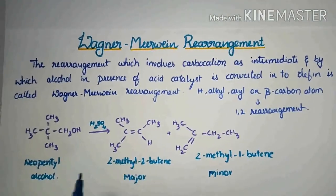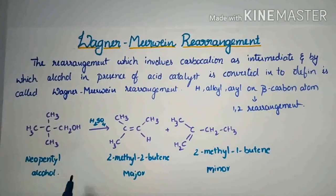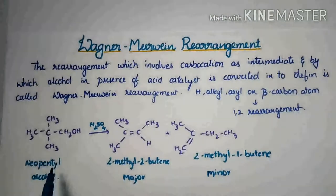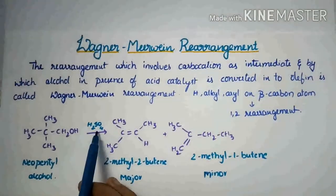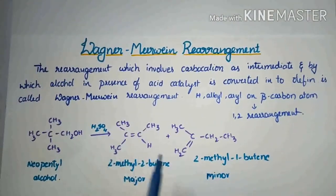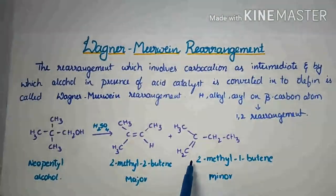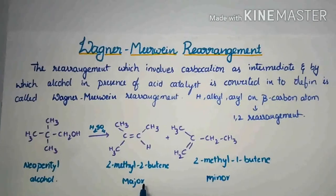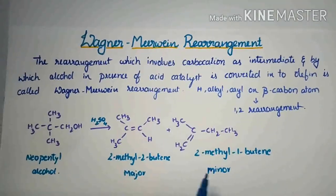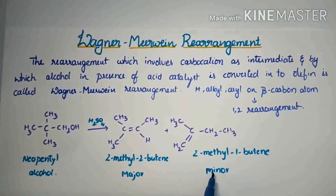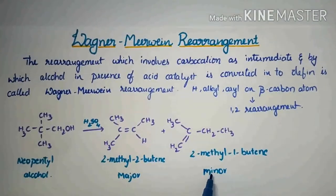Here let us see the overall reaction. It is neopentyl alcohol in the presence of an acid catalyst. It can form a mixture of olefins — one is the major product and another one is the minor product.